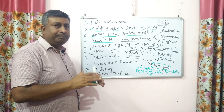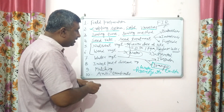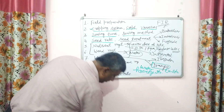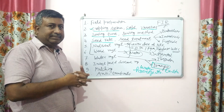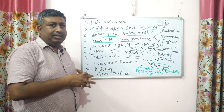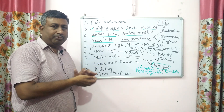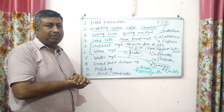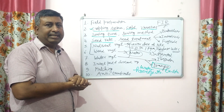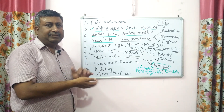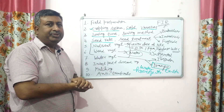Insect, pest, and disease management is important as these reduce crop production. By managing insects and diseases, we can increase crop and grain production. Different methods are available, and an integrated approach is very good because it is cost-effective and can control many types of diseases and insects. Recommended fungicides and insecticides are available for particular diseases and insects.